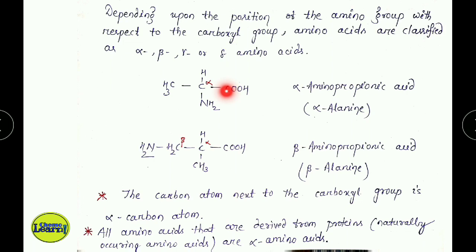If we consider COOH as the principal functional group, the carbon in its immediate vicinity is called the alpha carbon atom. The next carbon is the beta carbon atom, then gamma carbon atom, then delta carbon atom. Accordingly, amino acids are named alpha amino acids, beta amino acids, etc.